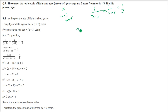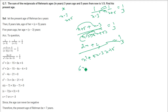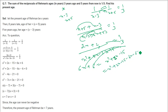Solving: taking LCM on the left side, (X plus 5 plus X minus 3) over (X minus 3)(X plus 5) equals 1 by 3, so (2X plus 2) over (X square plus 2X minus 15) equals 1 by 3. Cross-multiplying: 3(2X plus 2) equals X square plus 2X minus 15, giving 6X plus 6 equals X square plus 2X minus 15. Rearranging: X square plus 2X minus 6X minus 15 minus 6 equals 0, so X square minus 4X minus 21 equals 0.